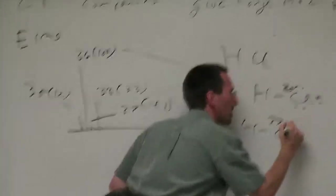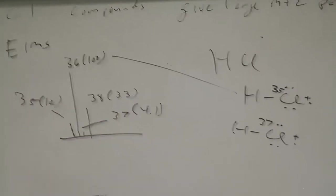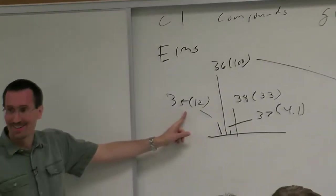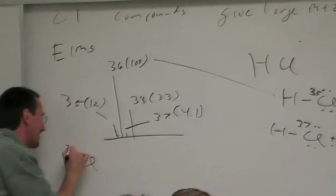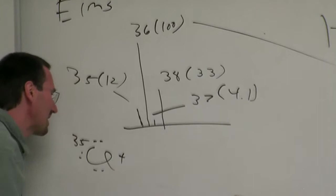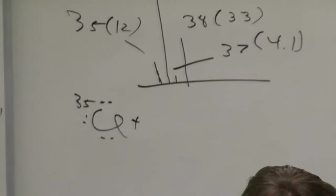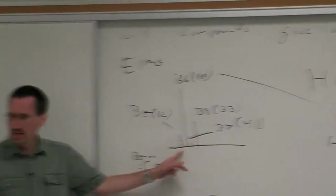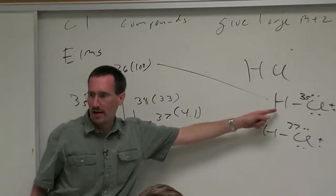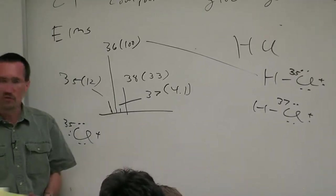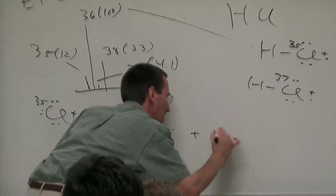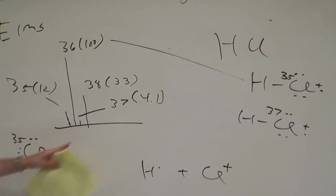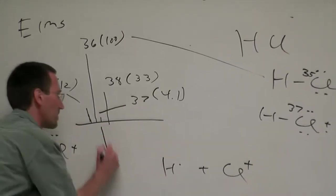Now we've got this guy over here, chlorine 35 plus. To an organic chemist it's much more disturbing than to a freshman to be writing these sorts of structures. With all the energy that's gone into the molecule, the bonds are vibrating with an electron knocked out, the bonds are weakened, and the molecule flies apart to give you H dot plus Cl plus. You don't see H dot because it has no charge. And the peak at 37? Cl 37 plus.